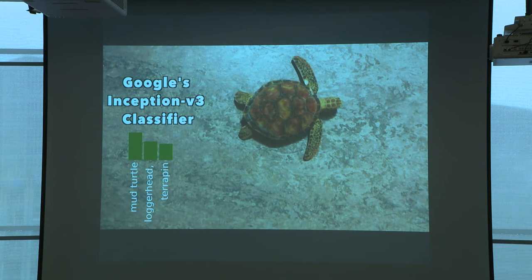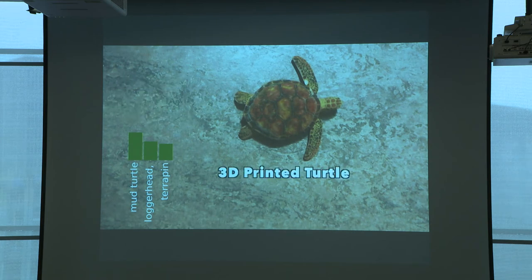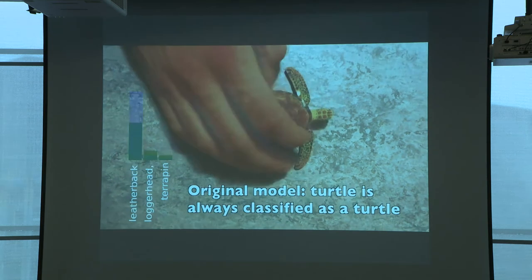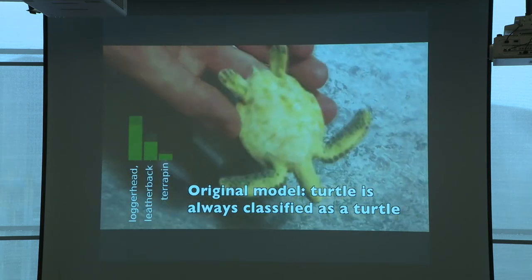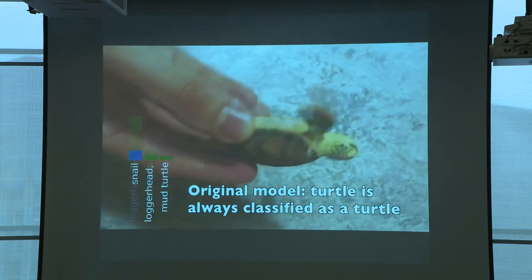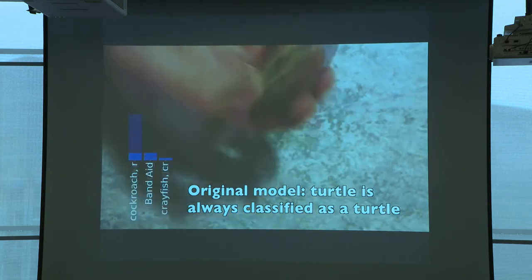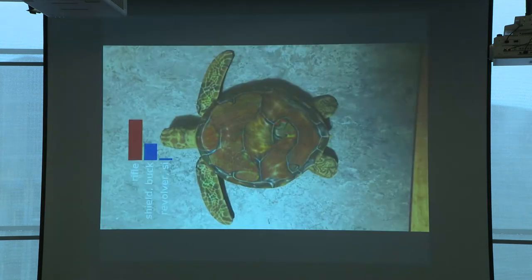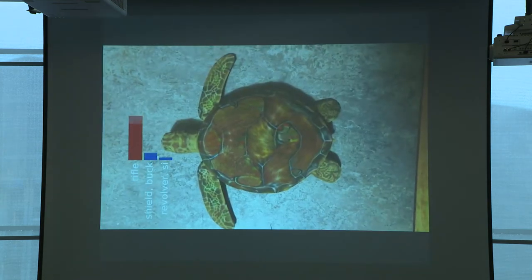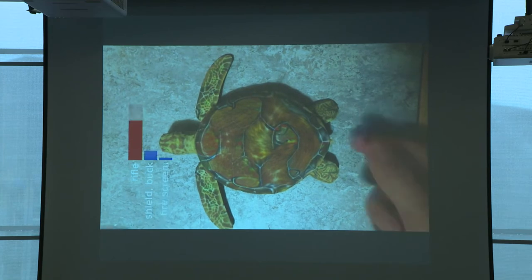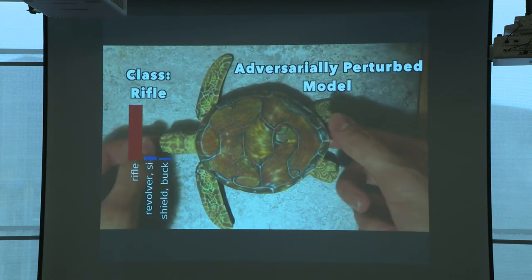This is Google's Inception V3 classifier we're working with. Here's the normal turtle with its standard texture, and then the adversarial turtle that looks like a rifle from all angles.